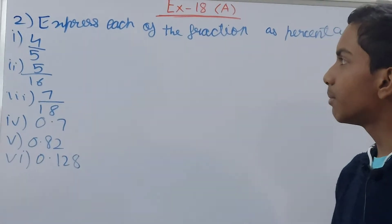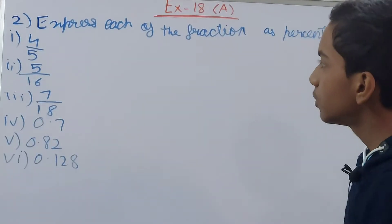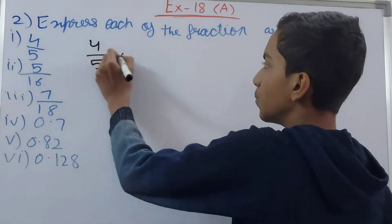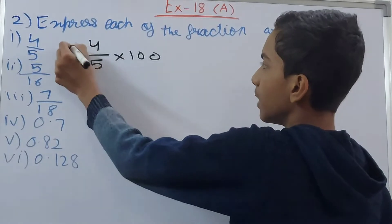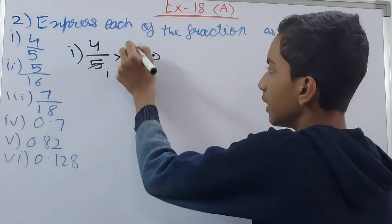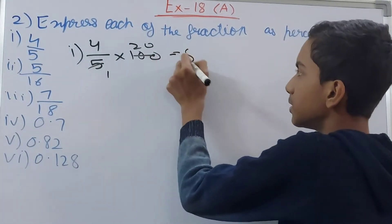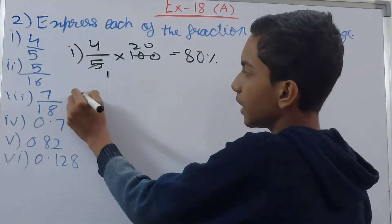All of the fractions will be multiplied by 100. So 4 upon 5, first into 100. This is the first part, so 1 and 20 here, so this becomes 80 percent.